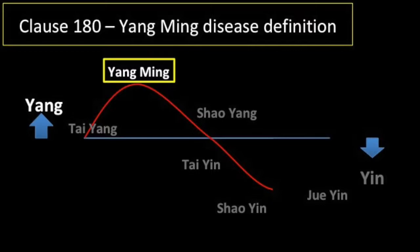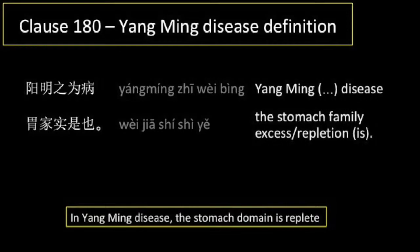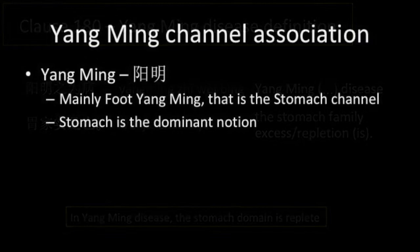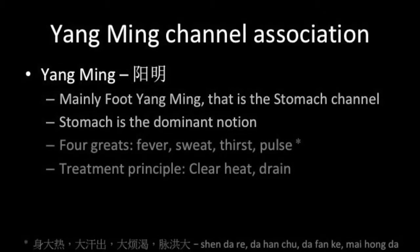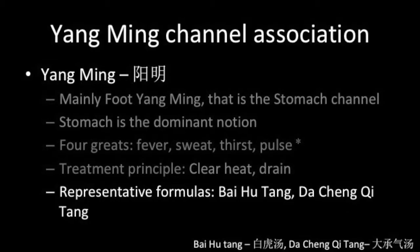Clause 180, Yangming channel disease definition: Yangming zhi wei bing, gui jia shi shi ye. In Yangming disease, the stomach domain is replete. Here we focus on the foot Yangming channel, that is the stomach channel. We encounter the four greats or excesses: fever, sweat, thirst, and a surging or flooding pulse. The treatment principle is to clear heat and drain. The representative formulas are Bai Hu Tang and Da Cheng Qi Tang.